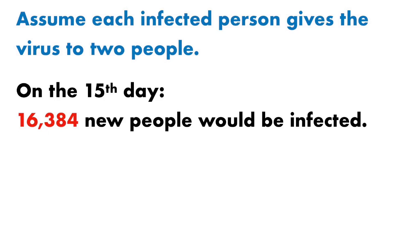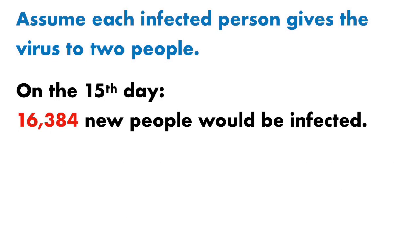And then you have to see the total — adding up all the people: the 1, plus 2, plus 4, plus 8, plus 16, plus 32, plus 64, plus 128, and so on, all the way up to 16,384. The total number of people on that 15th day is 32,767 people would be infected using this doubling model.